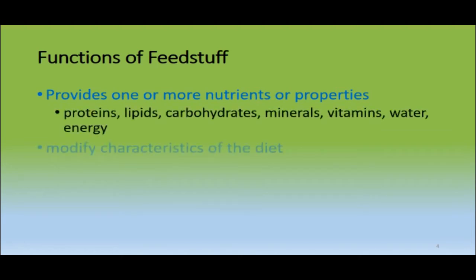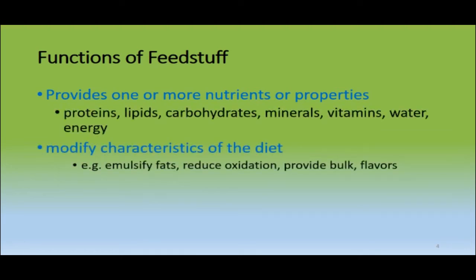Then comes the function of feedstuffs. Number one, they provide one or more nutrients such as protein, lipid, carbohydrate, mineral, vitamin, and water. Most importantly, the major role of these nutrients is to provide energy. The second type of feedstuff modifies characteristics of the diet — they are used to improve nutrient utilization, improve feed intake of the animal, and improve the keeping qualities and shelf life of the feed.